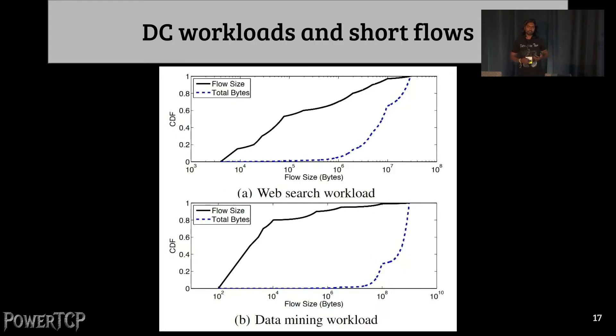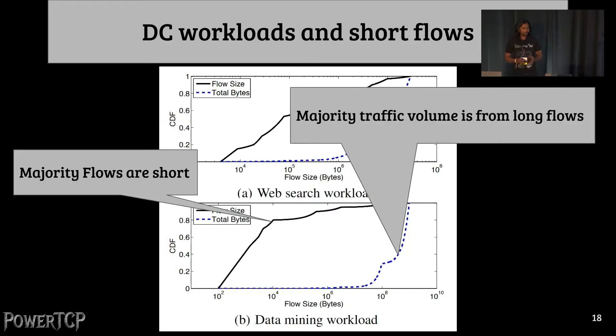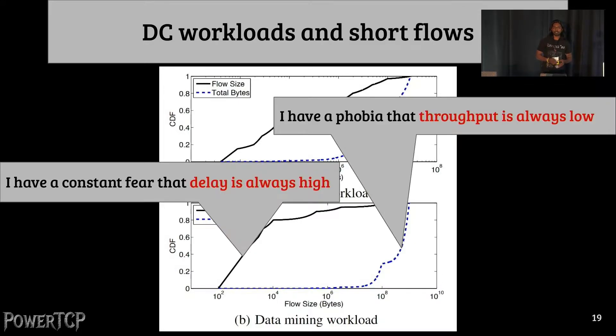Even worse, data center traffic is a mix of short flows and long flows. This is the measurement data from Microsoft data centers published in the PFabric paper. As we see, majority of flows are short, whereas a majority of traffic volume is coming from long flows. As a result, this puts a tight tension between throughput hungry long flows versus delay sensitive short flows.